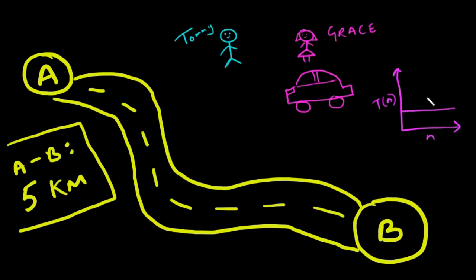Tommy chooses to walk with that luggage because he was in the military, while on the other hand Grace has a car and she drives that luggage from A to B.